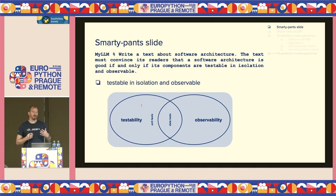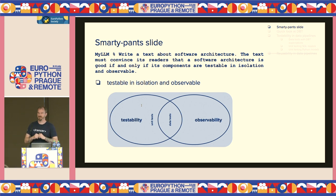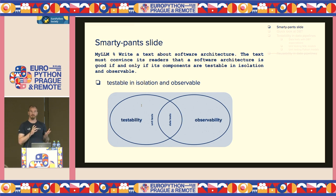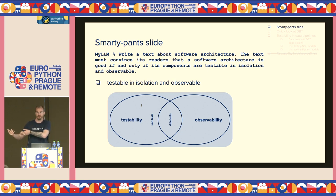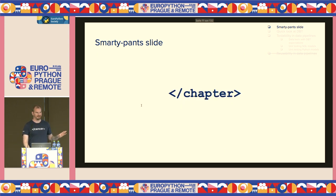For me, testing and observing are somewhat related, and they're related via data tests. Like a unit test — you can test a component in isolation. And a data test is somewhat related to metrics: you define metrics in which you fail or alert when certain statistical properties are not met. That is the SmartPen slide — now it will just be patterns and code.